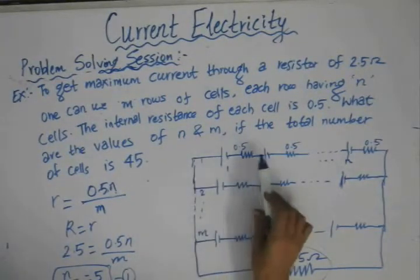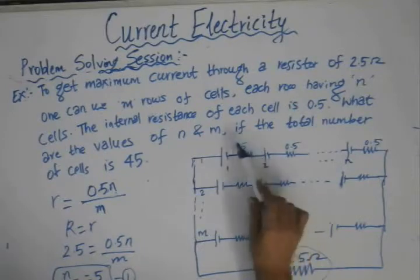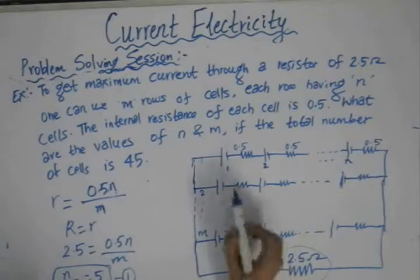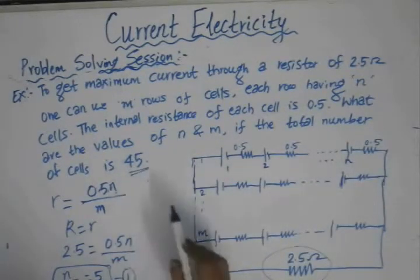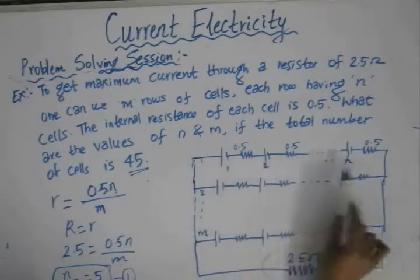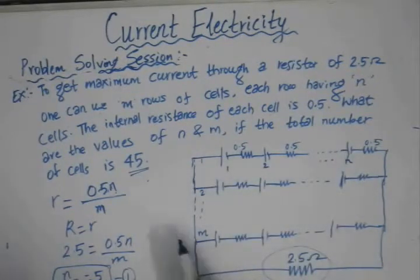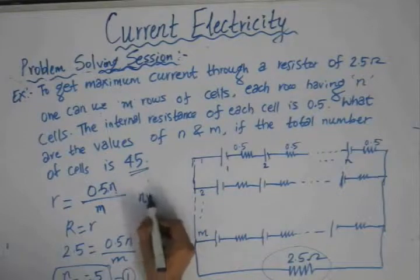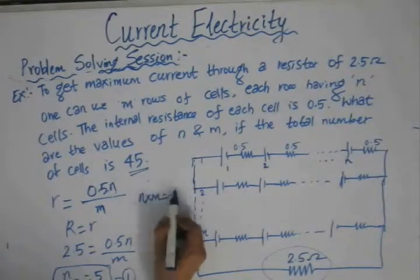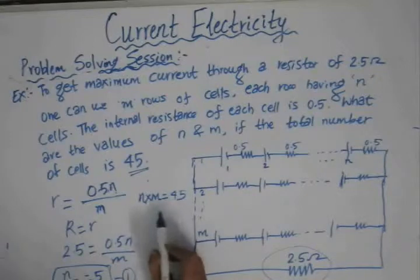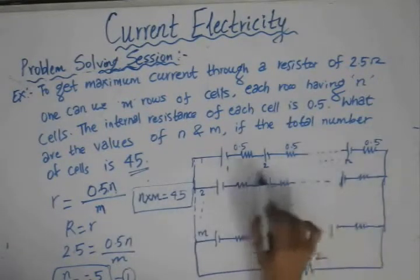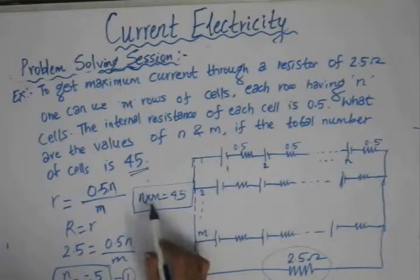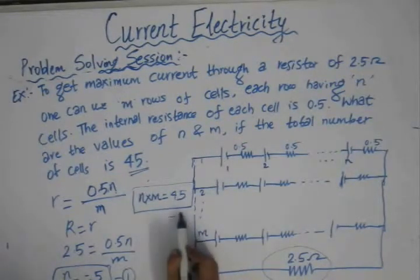The second equation comes from the total number of cells. The total number of cells is 45. In each row there are N cells, and we have M rows, so the total number of cells is N times M. Therefore N × M = 45. This is equation number two.